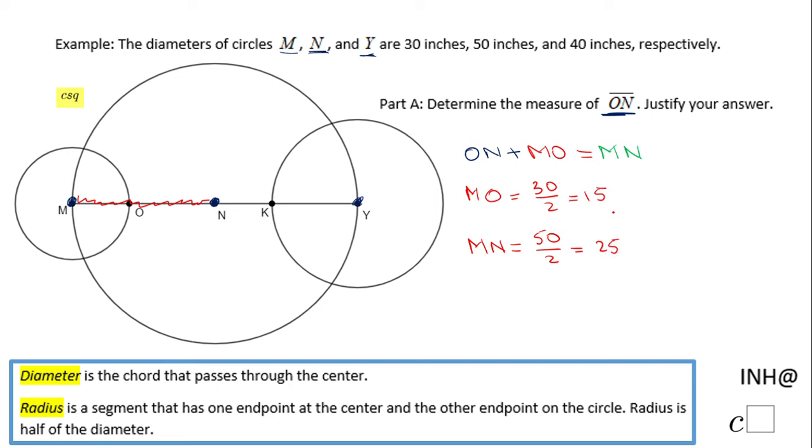Now we can take these two values and plug them in this relation we started with. MO is 15, so let's start with ON, the one we need to find out, plus MO, which is 15, and MN is 25. So finding ON, just subtract 15 on both sides, and ON is nothing else than 10. And that's it for this Part A.